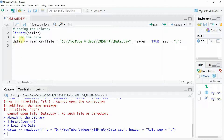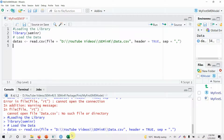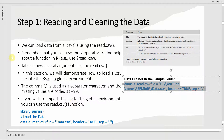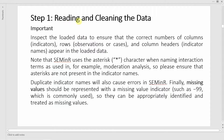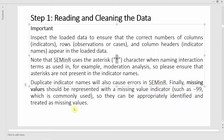Now how do I know that this file has been loaded correctly? Once you have loaded the data, you will have to check it. Inspect the loaded data to confirm the correct number of columns, indicators, rows, observations, and column headers are loaded. Note that seminr uses an asterisk character when naming interaction terms, such as in moderation analysis — so please ensure that asterisks are not present in the indicator names. Duplicate indicator names will also cause errors. Finally, missing values should be represented with the missing value indicator minus 99, which is commonly used.